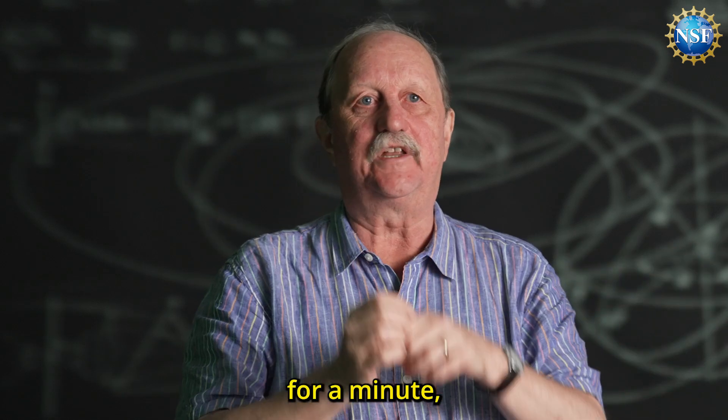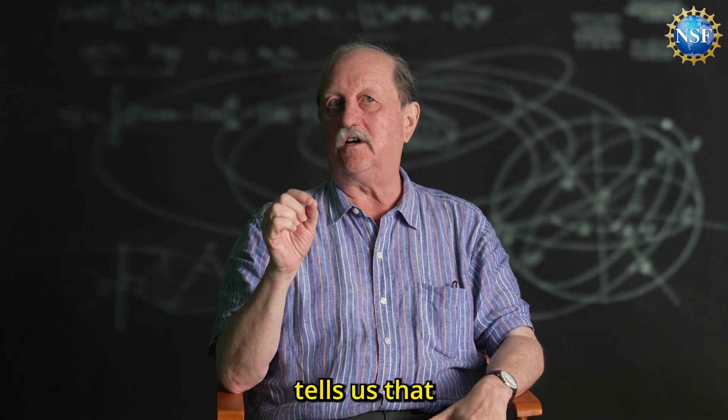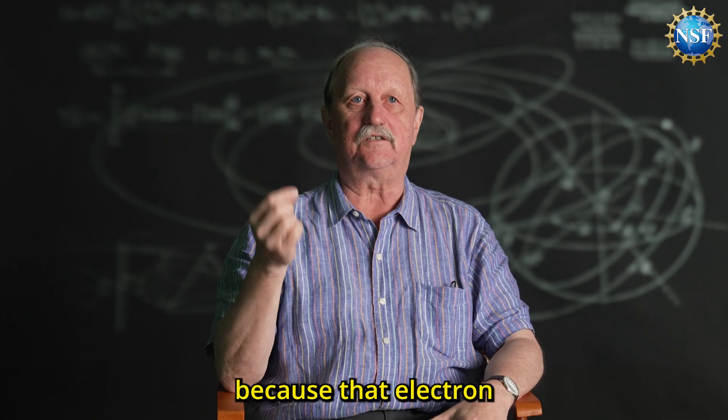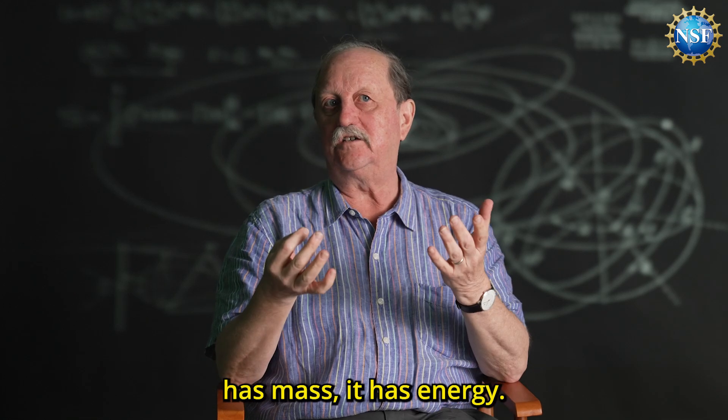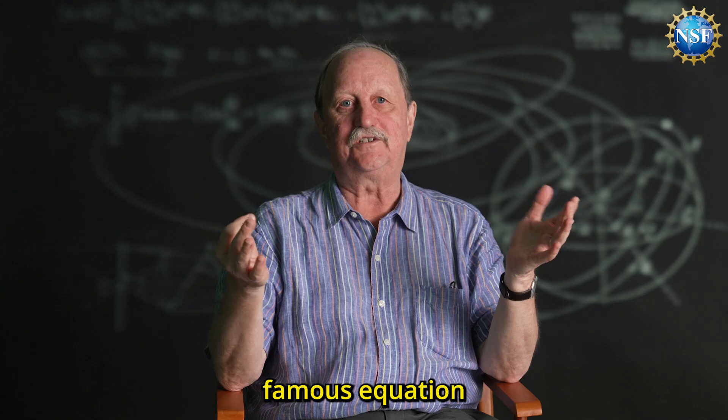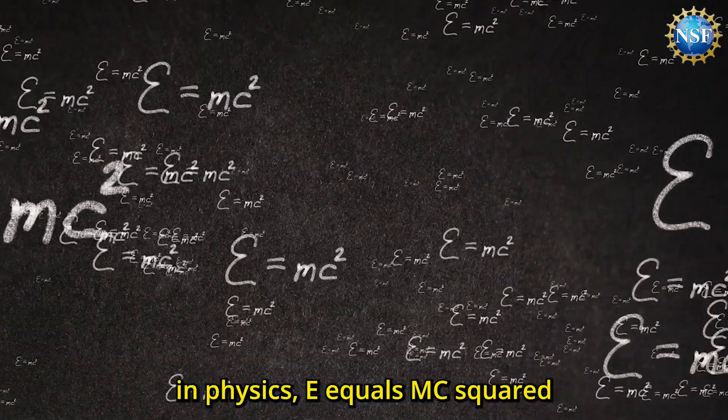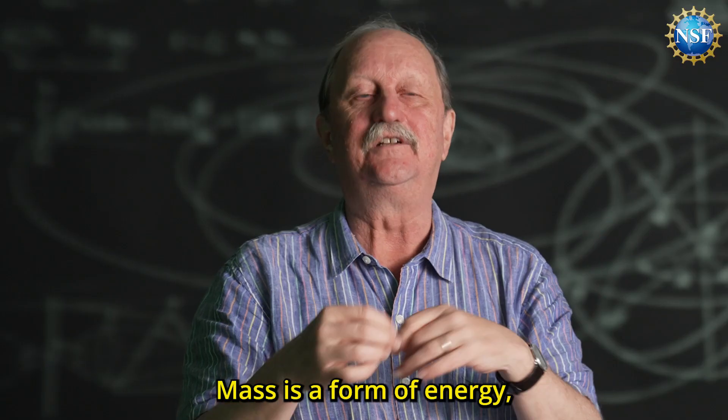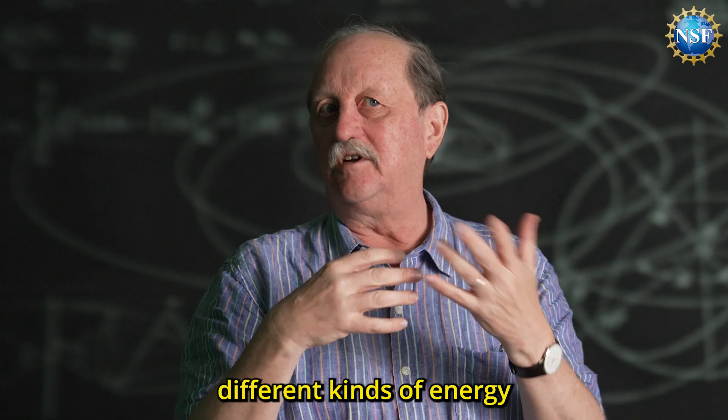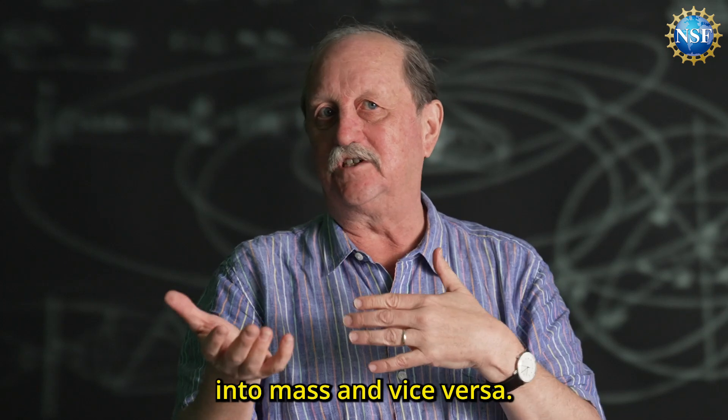If we think about the electron for a minute, special relativity tells us that because that electron has mass, it has energy. This is the most famous equation in physics: E equals mc squared. Mass is a form of energy, and we can convert different kinds of energy into mass and vice versa.